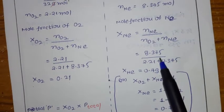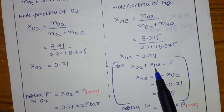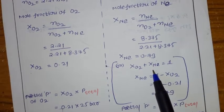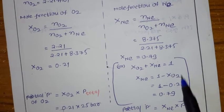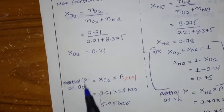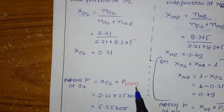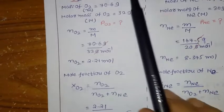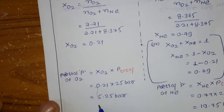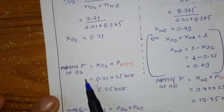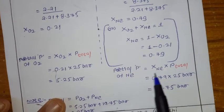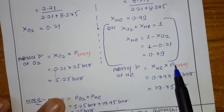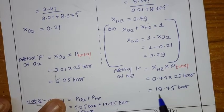Partial pressure of Oxygen = mole fraction of Oxygen × P_total = 0.21 × 25 = 5.25 bar. Partial pressure of Neon = mole fraction of Neon × P_total = 0.79 × 25 = 19.75 bar.